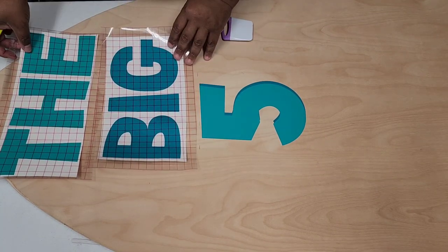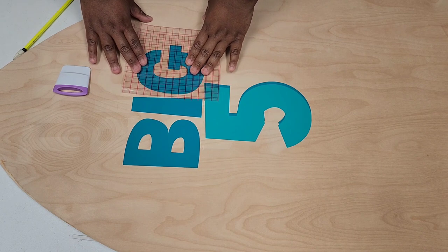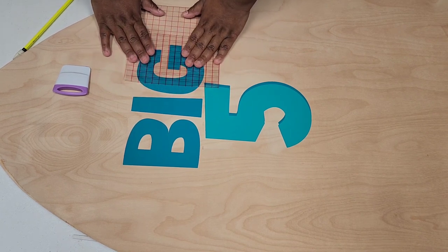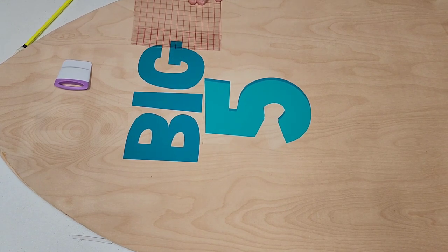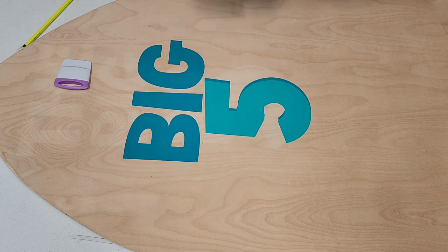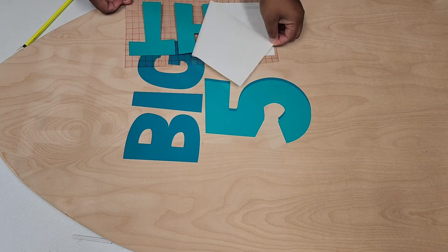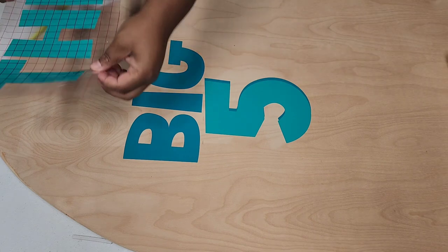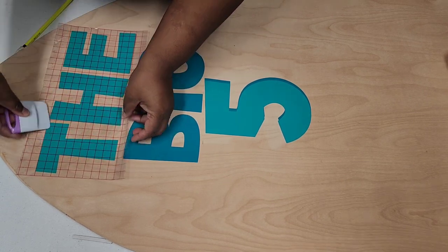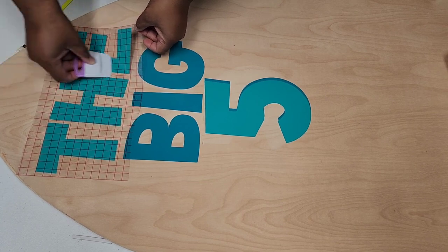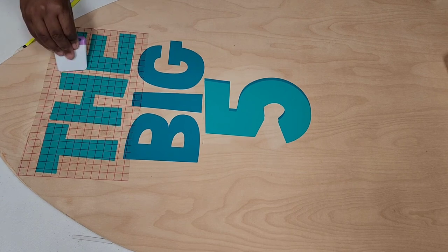So next we're going to place our words above the five, and this was a lot easier. I don't know if it was because the font was smaller or maybe because it's only one layer of vinyl. The five actually is like two layers of vinyl to have like the little shadow. So I think maybe because it was just the one layer, it was a little easier to put the word 'the' and the word 'big' on the surface. But you just want to use the same principles of making sure there's no bubbles and making sure that your positioning is how you want it to be.